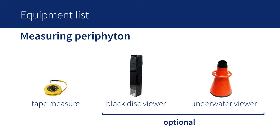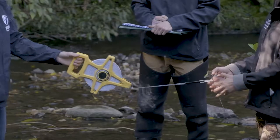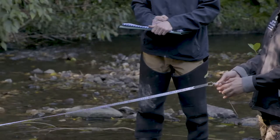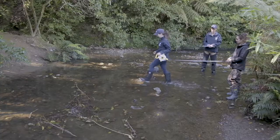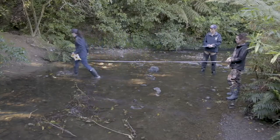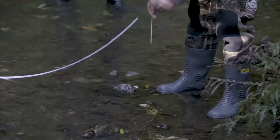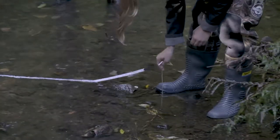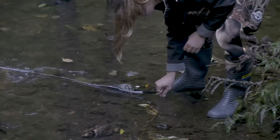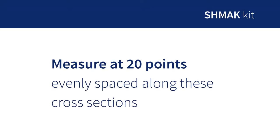Here is the equipment you'll need to measure levels of periphyton. The first step is setting up one or more cross sections directly across the stream to the next bank. You'll be measuring periphyton at 20 points along the stream, evenly spaced along these cross sections.